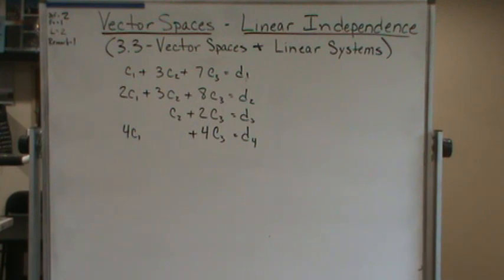Okay, for example, if we look at this system here, we can look at this and we said that this has a solution if and only if the vector of d's is a linear combination of the column vectors, right?